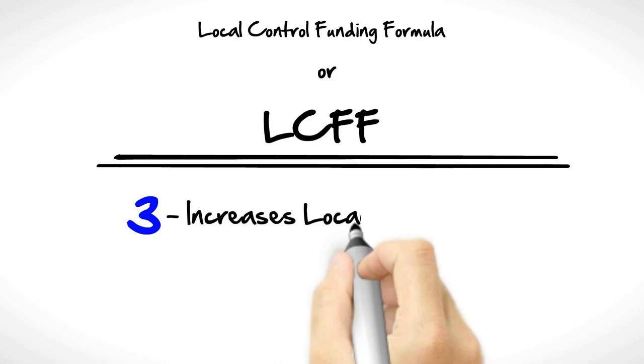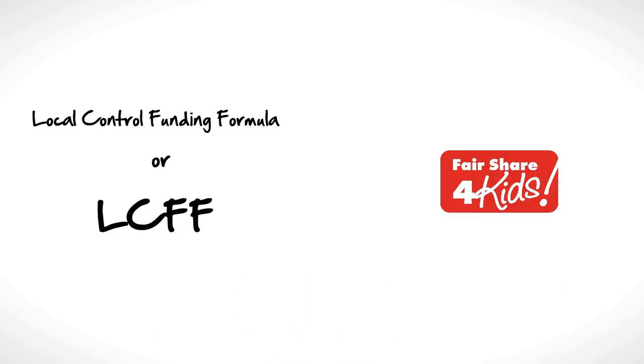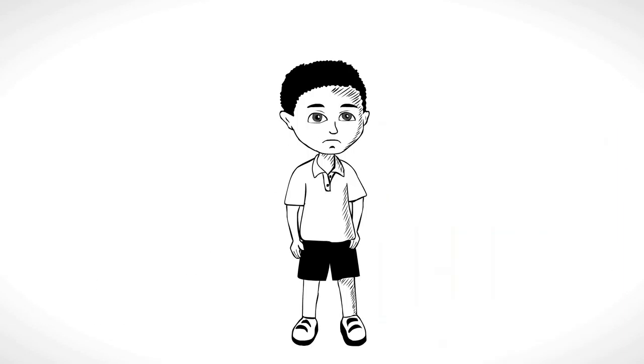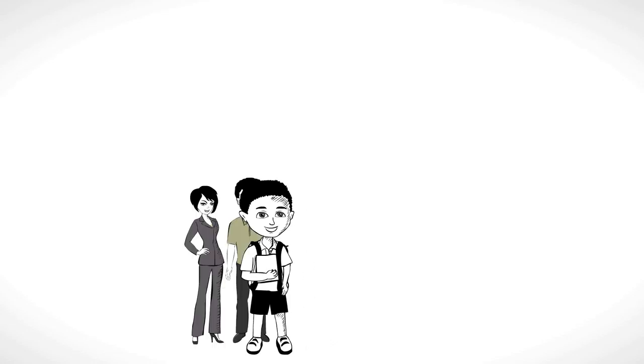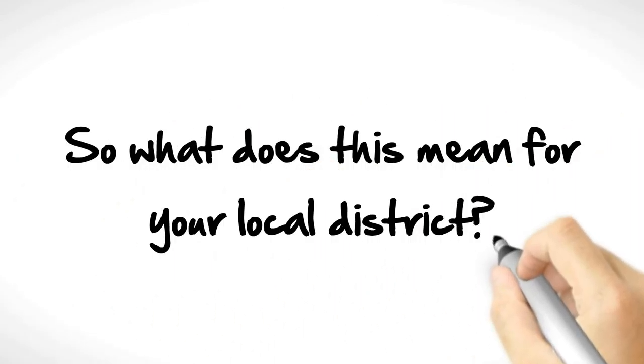3. Increases local control, giving local school districts more options on how to best use funds. Fair Share for Kids supports this plan so long as low-income students receive the support they need and parents have a voice on how monies are spent. So what does this mean for your local district?